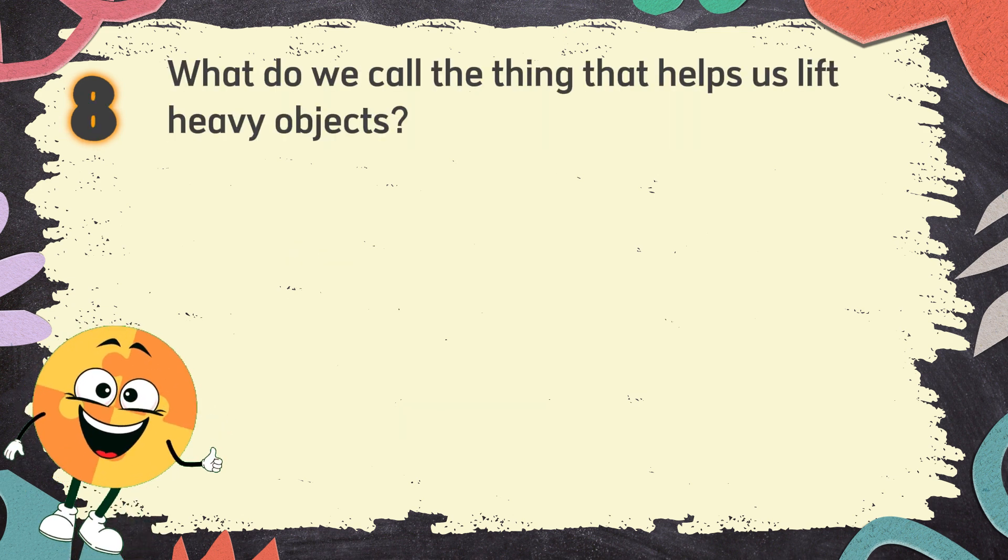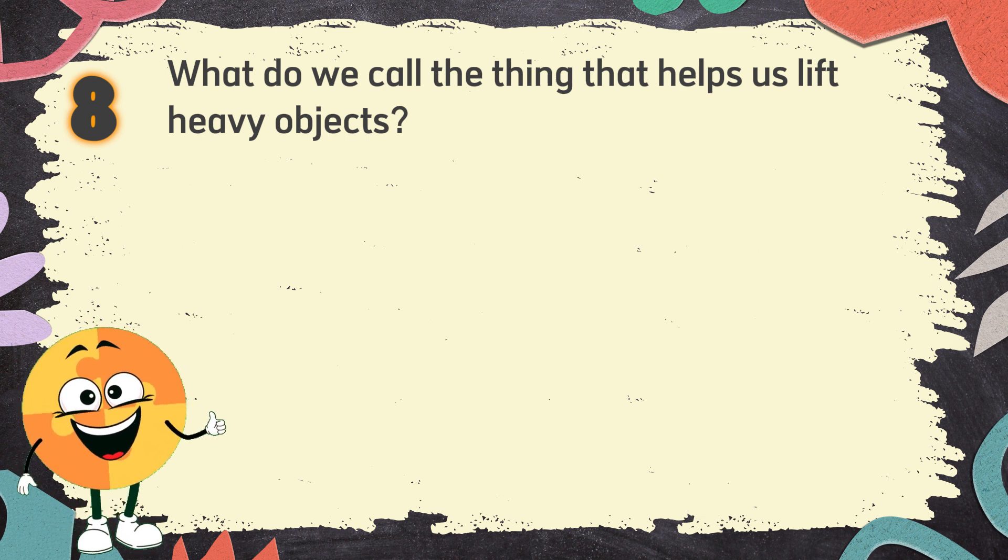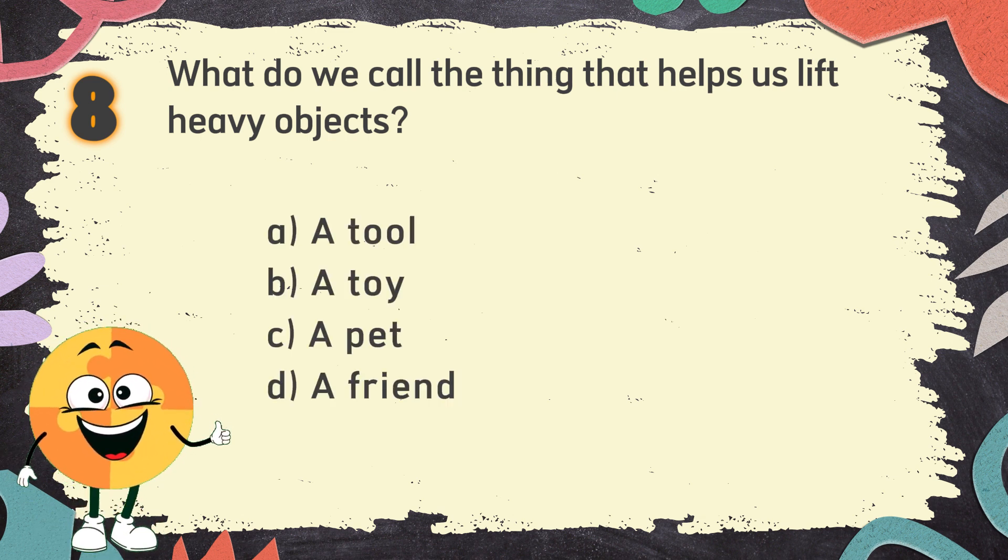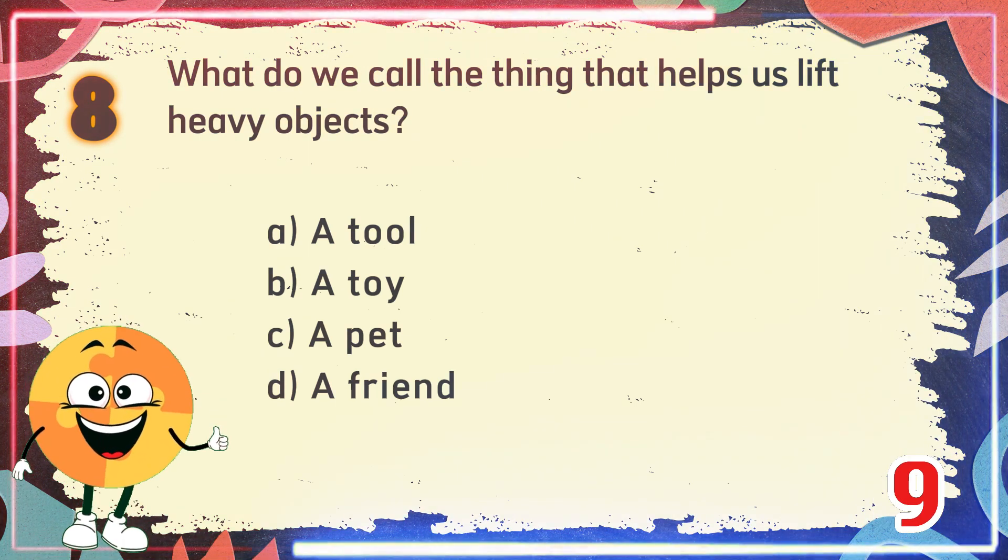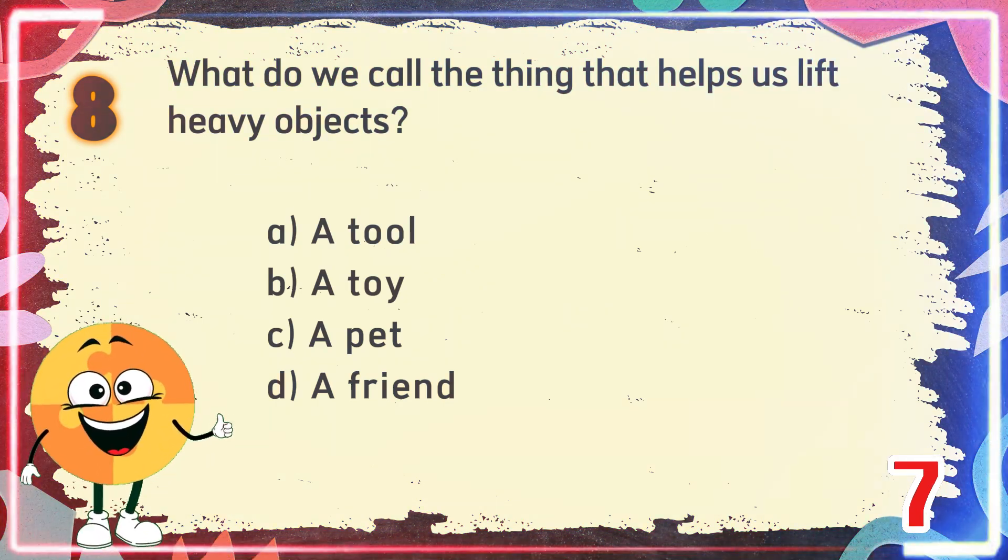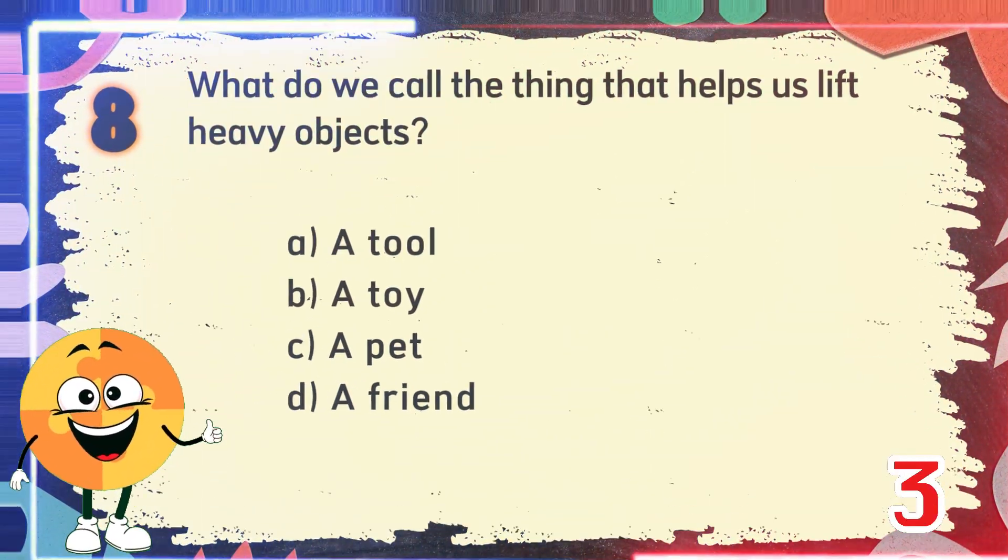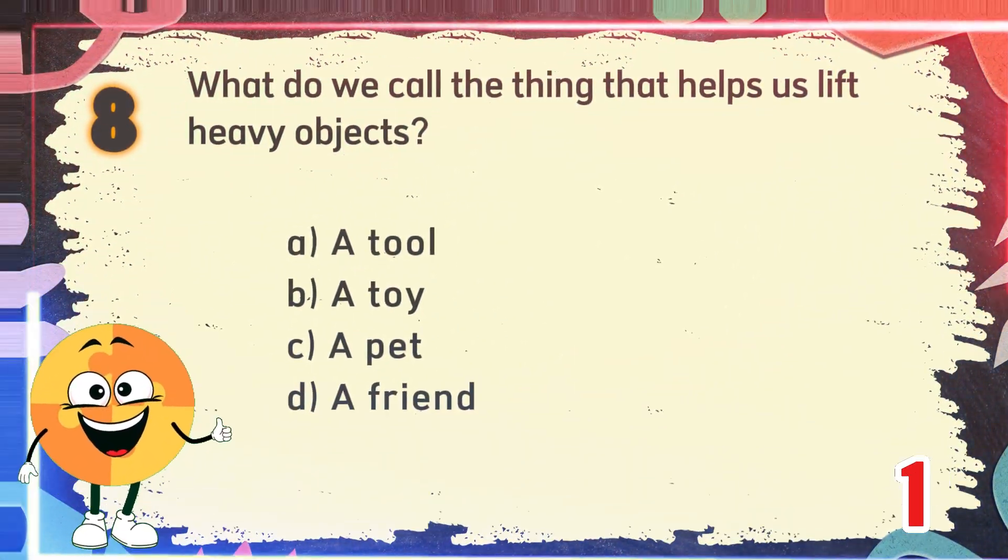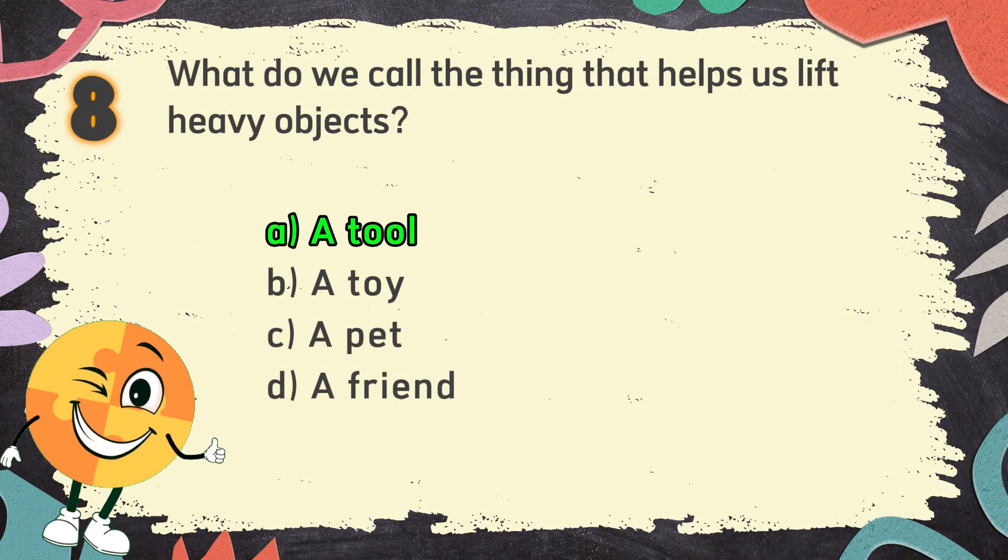Number 8. What do we call the thing that helps us lift heavy objects? The choices are A. A tool, B. A toy, C. A pet, D. A friend. The correct answer is A. A tool.